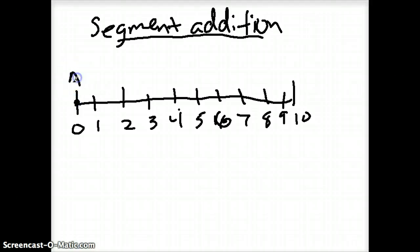Let's say that at zero we call that point A. Let's say at three we'll call that B and then all the way at ten we'll call that C. Well this distance from A to B is three units, right?